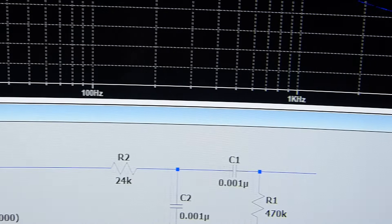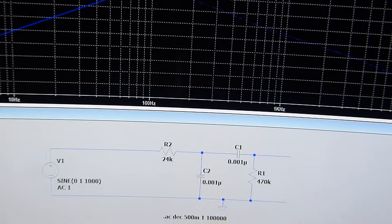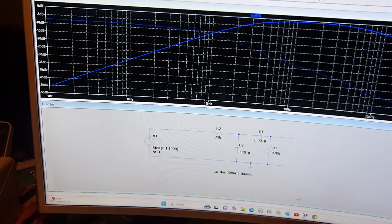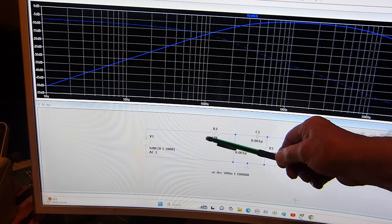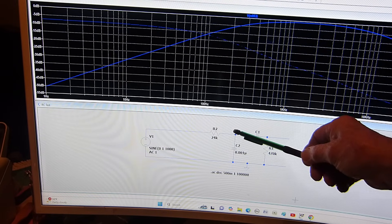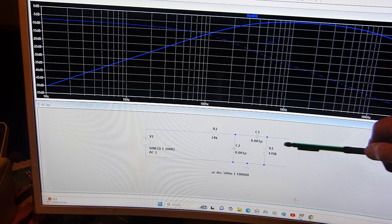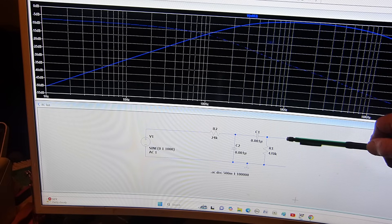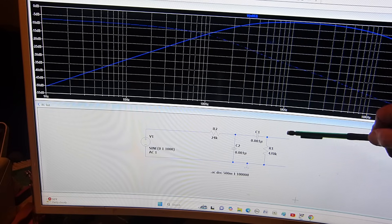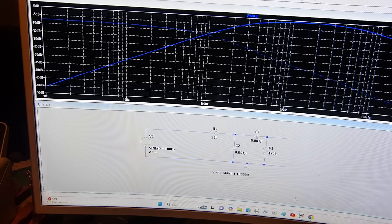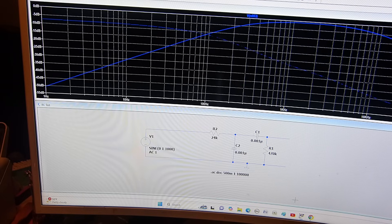See, this is that circuit out of that Brooks 12A right here - the 24k, the 0.001, the 0.001, and the 470k. This is going into the grid, this is the hot lead, this is the ground reference. I'm not drawing the whole schematic because it just isn't necessary.